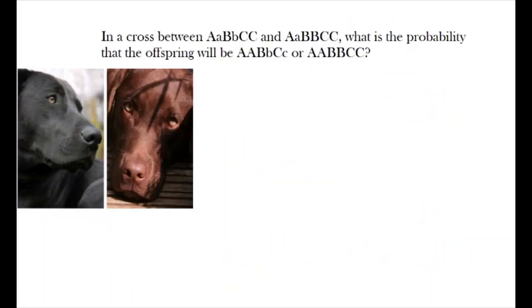Now let's see a more complex example. In a cross between one genotype and another, what is the probability that the offspring would be capital A, capital A, capital B, lowercase b, and capital C, lowercase c, or capital A, capital A, capital B, capital B, and capital C, capital C?